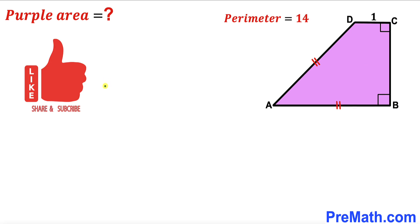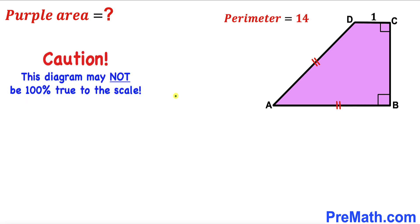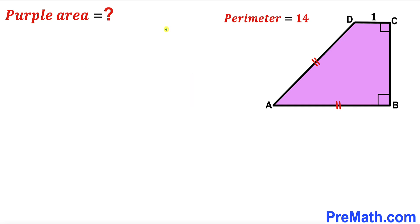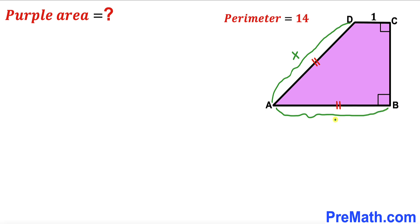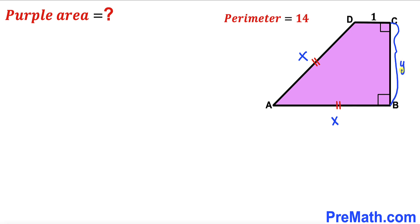Please don't forget to give a thumbs up and subscribe, and please keep in mind that this figure may not be 100% true to scale. Let's go ahead and get started. Let me label the side lengths of this trapezoid. I'll label side AD as X, so side AB is going to be X as well, and I'll label side BC as Y.